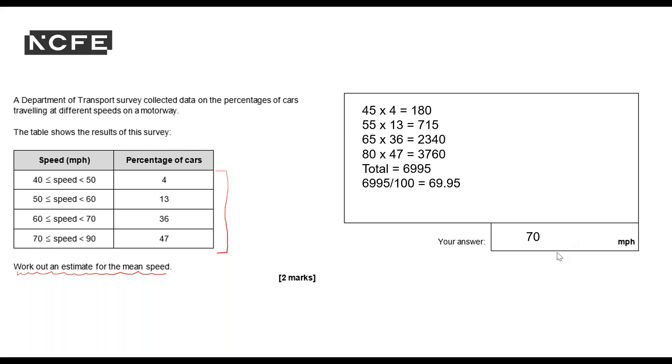And does this answer make sense? 70 miles per hour, speed on a motorway. Not many cars, 240 to 50. It looks as if the highest percentages are travelling. The highest percentage is over 70. So around 70 miles per hour. My answer makes sense. It's in miles per hour and I've done it correctly.